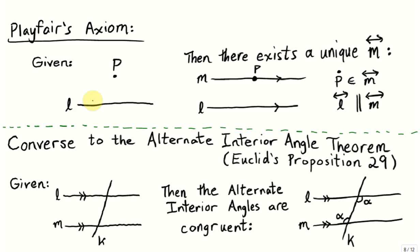As a quick refresher, what Playfair's axiom says is that given a line L and a point P not on that line, there exists a unique line M such that M passes through the point P and M is parallel to L.